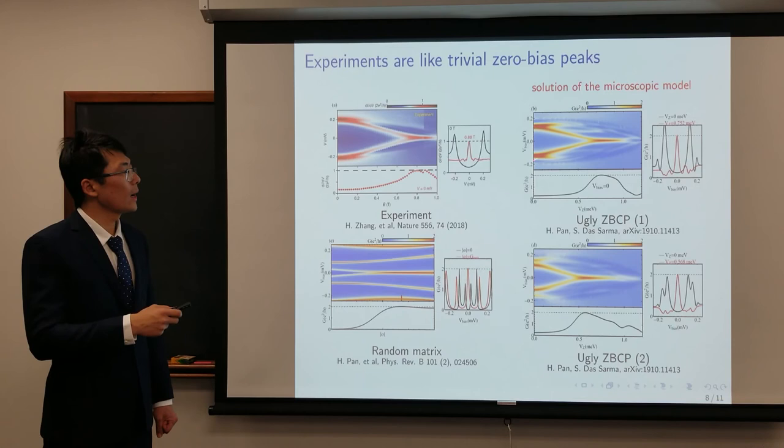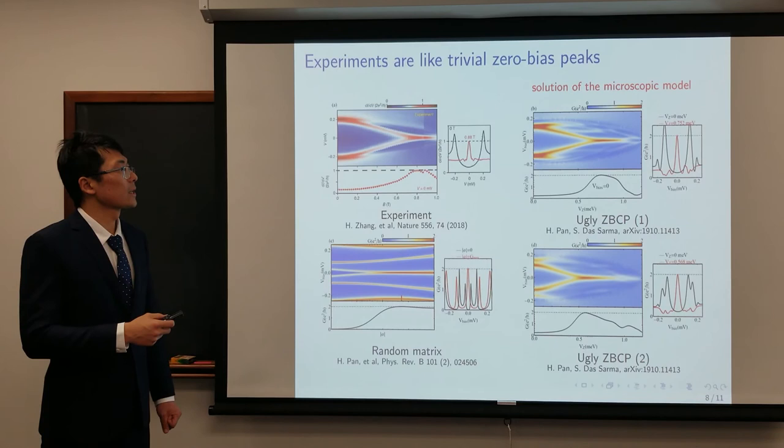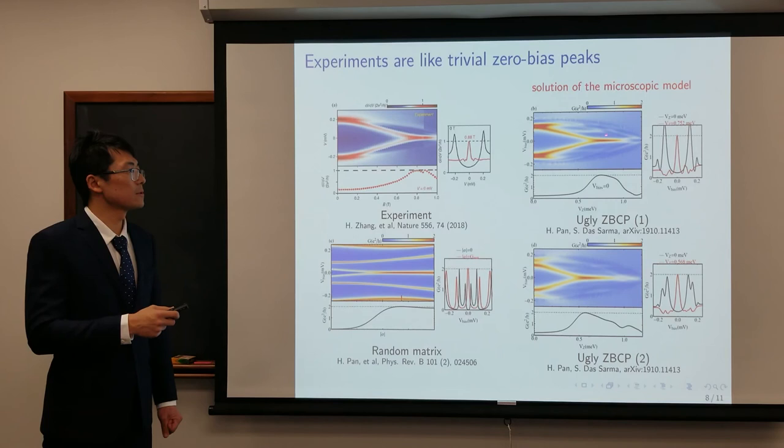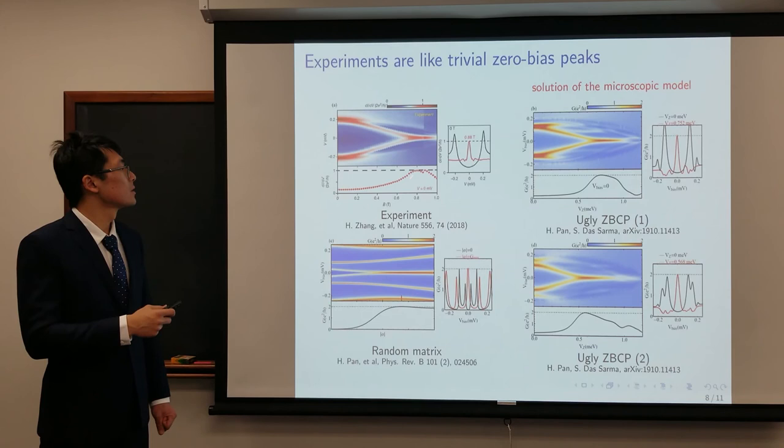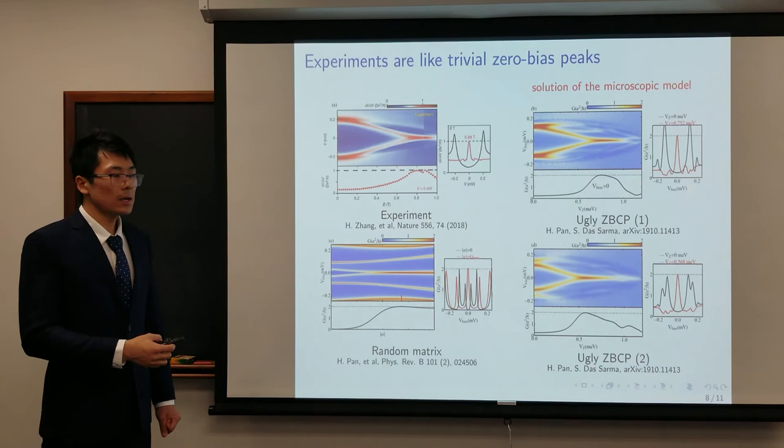On the right figure, we show two instances of the ugly zero-bias peak from another paper of ours. The ugly zero-bias peaks are all low-lying trivial states, which are directly calculated from the Bogoliubov-de Gennes Hamiltonian of a microscopic model, which are mainly induced by disorder. We can tell that this ugly zero-bias peak looks much similar to the random matrix theory, and also qualitatively similar to the experiment, and that indicates even the best current experiment is highly possible to be the trivial andreev bound state, and the underlying disorder is very large here.